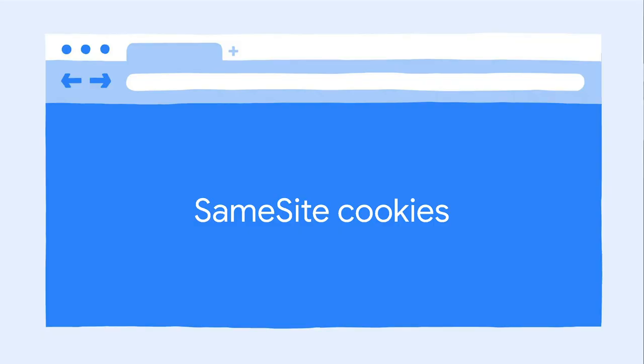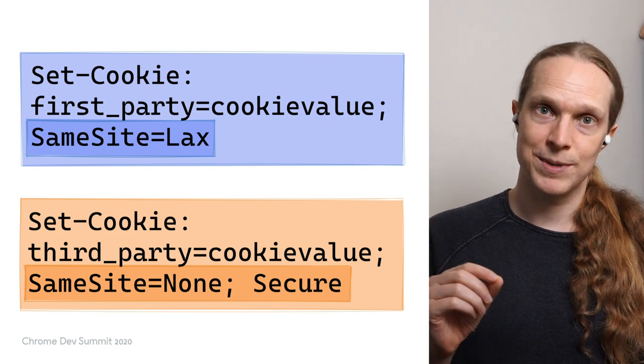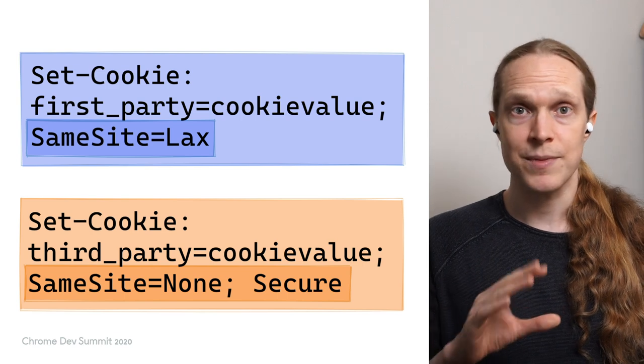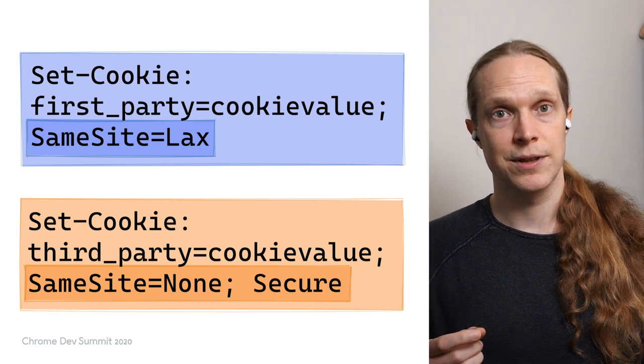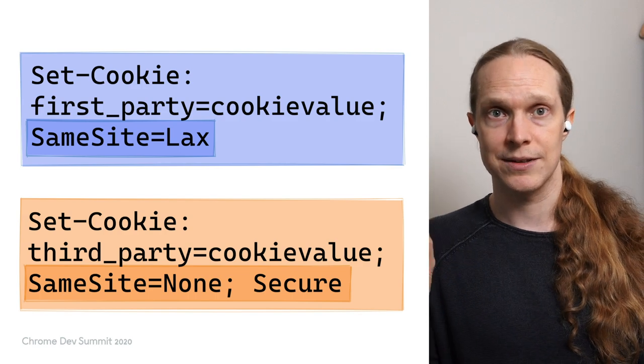We have fully rolled out the same-site cookie changes. Just to recap: if a cookie does not have a same-site attribute, then it will be treated as if it's specified same-site equals lax, meaning restricted to first-party only. If a site does want a third-party cookie, then it needs to be set with both same-site equals none and secure. That's a big milestone, but there's more.